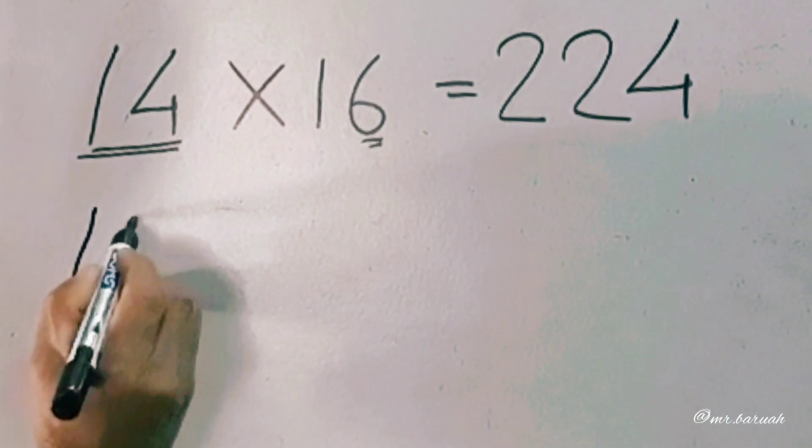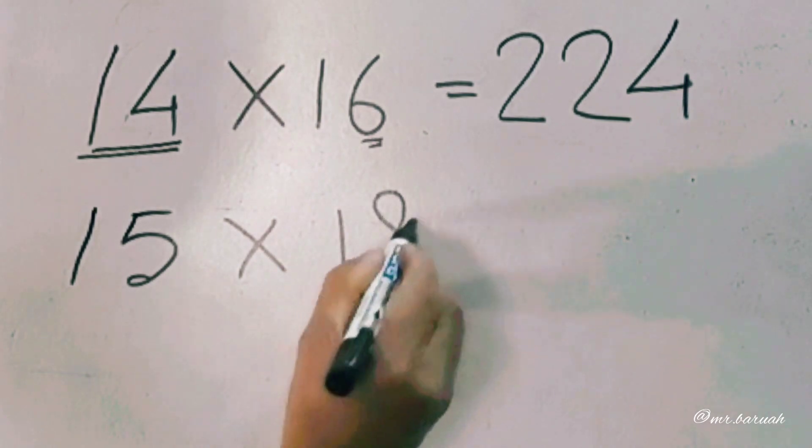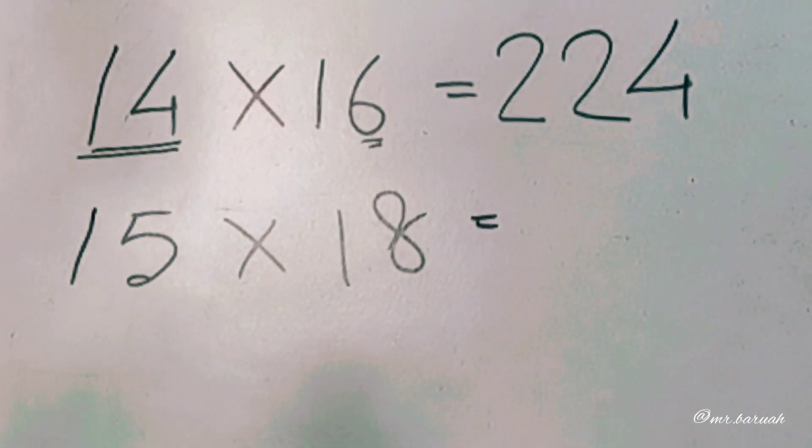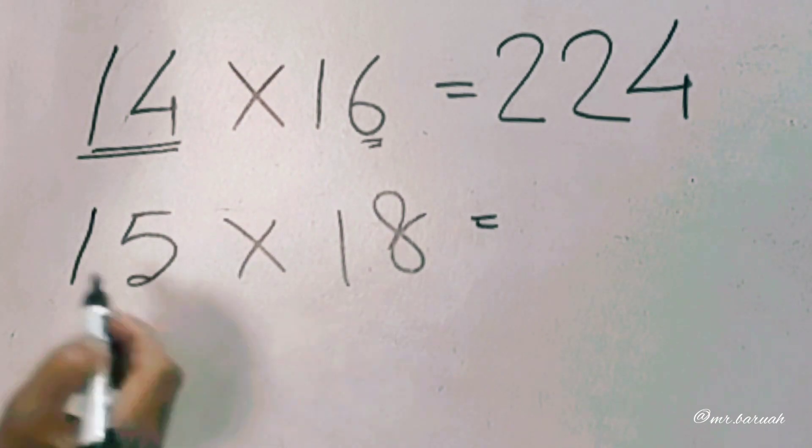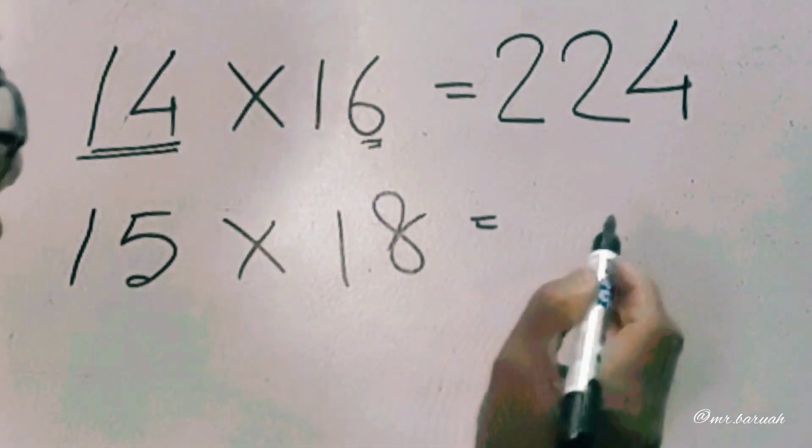15 into 18. First time, 8 and 5. 8 into 5 equals 40, so 0, 4 in hand.